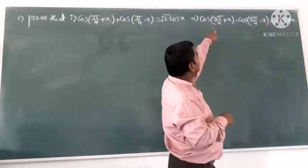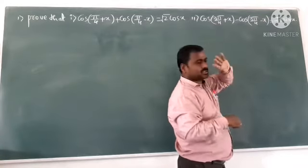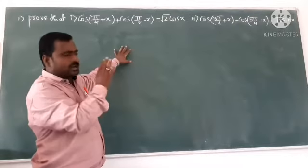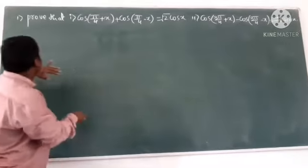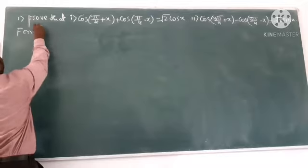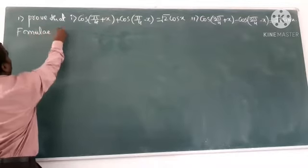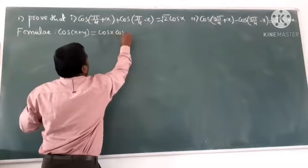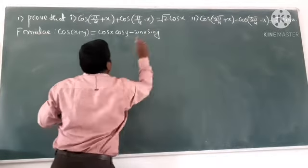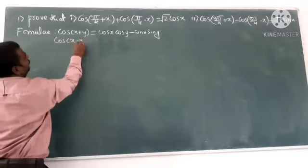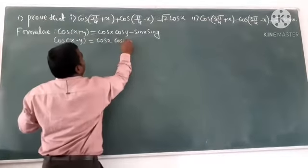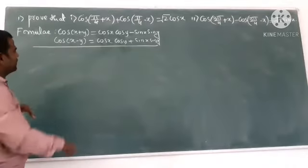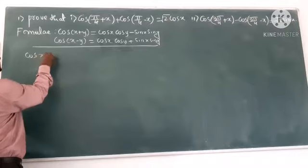Whenever you are going to remember, no problem. Otherwise you can go to some formula. What is the formula? cos(x + y), that is cos(x)cos(y) - sin(x)sin(y). cos(x - y) is cos(x)cos(y) + sin(x)sin(y). So directly, plus minus one formula.